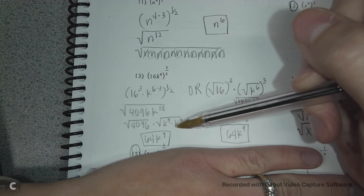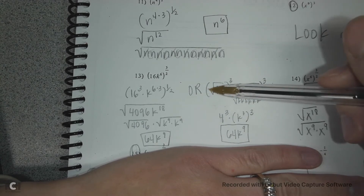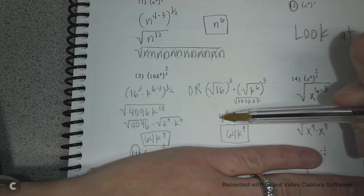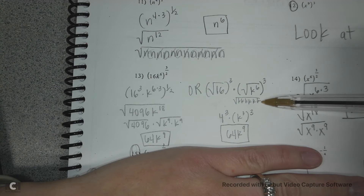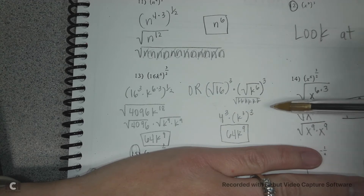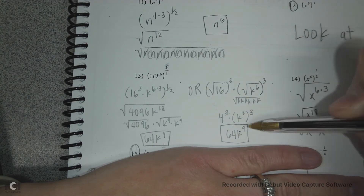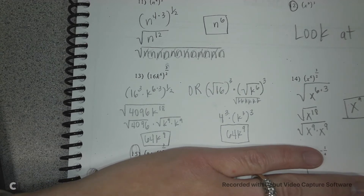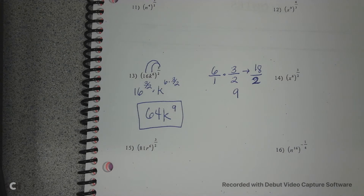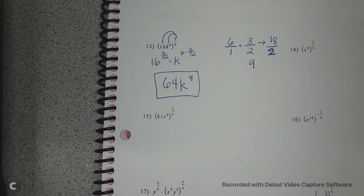Another method: take the square root of 16 first since it's a perfect square — that gives 4 — then take pairs from k^6 under the square root: three pairs come out giving k^3, and then cube everything: 4 cubed is 64 and 3 times 3 is 9. All three methods give 64k^9. It doesn't matter which method you pick as long as you show your work.